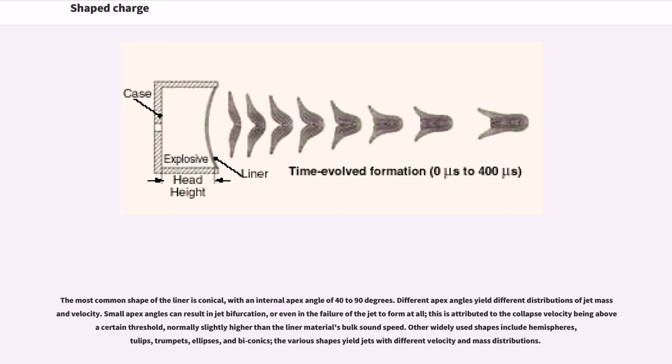Other widely used shapes include hemispheres, tulips, trumpets, ellipses, and biconics. The various shapes yield jets with different velocity and mass distributions.